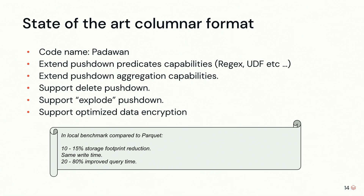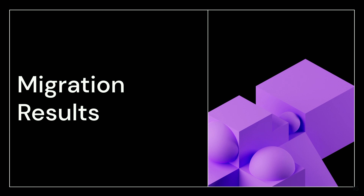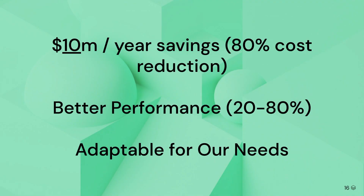In local benchmarks, our column format has a storage footprint 10 to 15 percent better than Parquet, the same write latency, and between 20 to 80 percent improvement in query time latency. Back to the migration results: we had this amazing platform to migrate to, and it took us a couple of years. We saved over 10 million dollars a year — an 80 percent cost reduction migrating off Snowflake. Even better, in my opinion, are the performance improvements: in user-visible workloads with dashboards, we're seeing 20 to 80 percent faster screen loads.